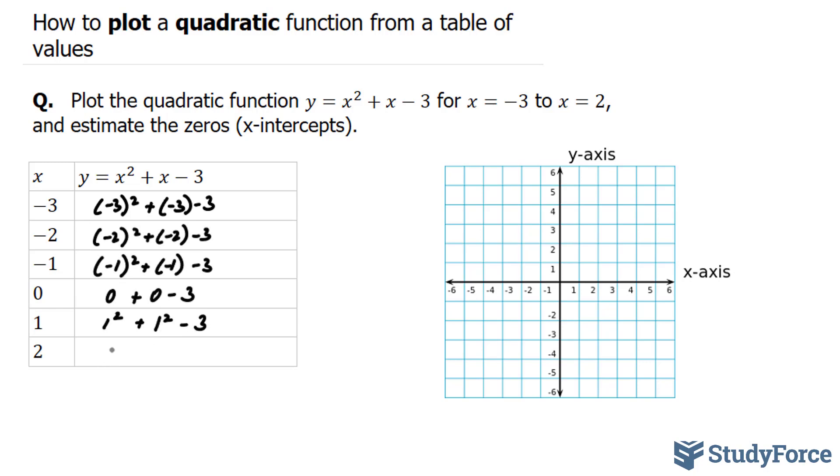And finally, 2 to the power of 2 plus 2 minus 3. This gives us the following answers. So negative 3 to the power of 2 is positive 9 plus negative 3, that's positive 6, minus 3 is positive 3.